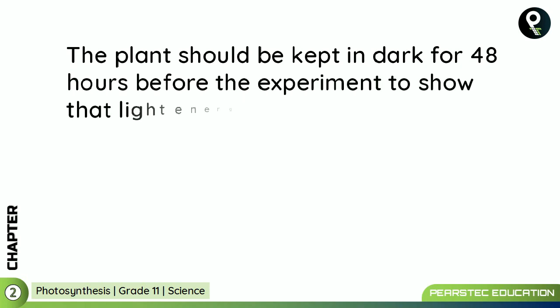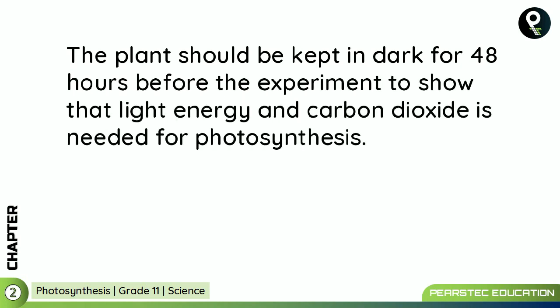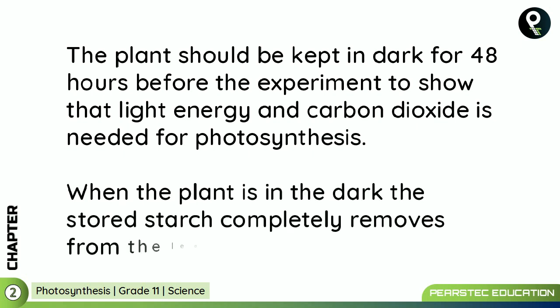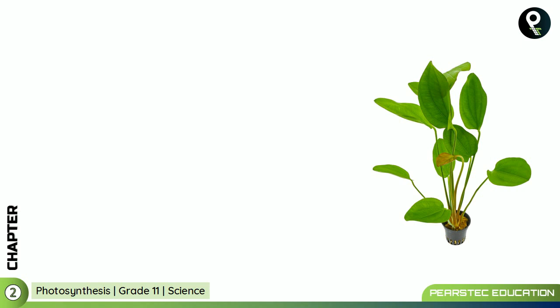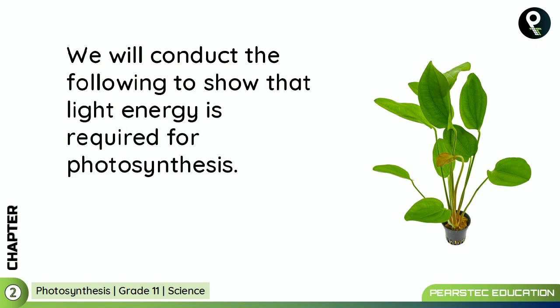The plant should be kept in dark for 48 hours before the experiment to show that light energy and carbon dioxide are needed for photosynthesis. You are going to take a pot of plant and keep it in a dark place where it does not receive sunlight for 48 hours. When the plant is in the dark, the stored starch completely removes from the leaves. Then we take out this plant, which was kept in a dark place, and conduct the following experiments.